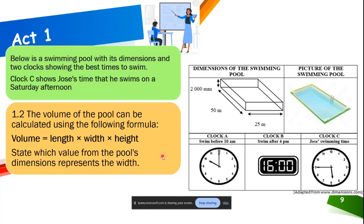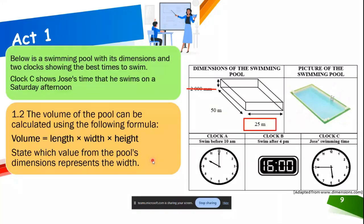Question 1.2: the volume of the pool can be calculated using V = length × width × height. They ask which value from the pool's dimensions represents the width. Don't be tempted to calculate the volume — the question only asks you to state the width. The 2000 mm is the height from the previous question, so we're left with 50 and 25 metres. The width is always the lower value, so the answer is 25 metres for two accuracy marks.